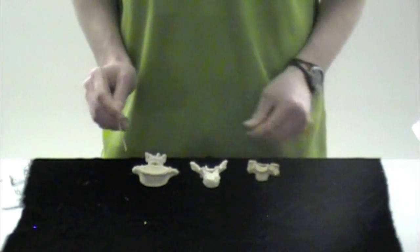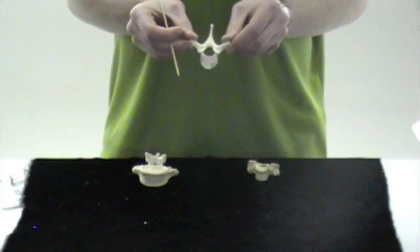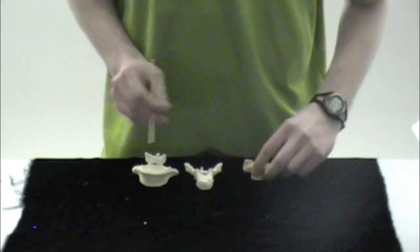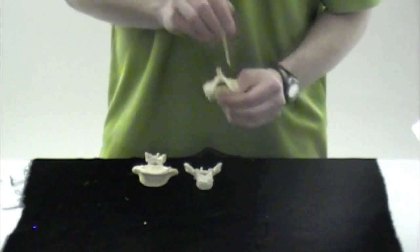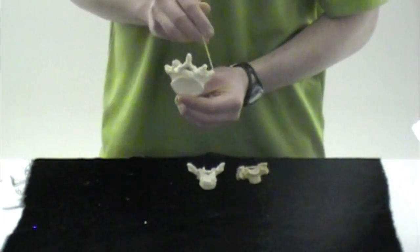Then the transverse processes. We have your transverse processes on the thoracic, right here and right here. On the cervical, we have the transverse processes here and here. And then on the lumbar, we have them here and here.